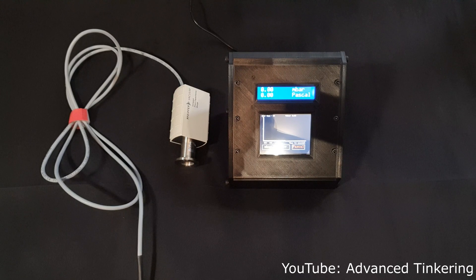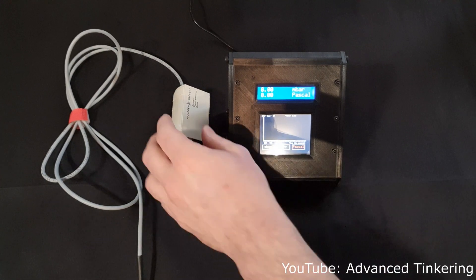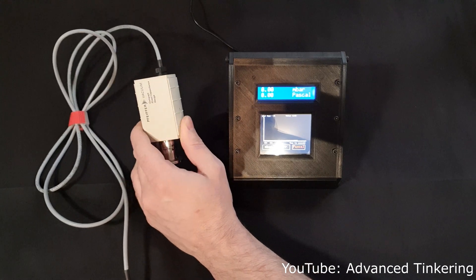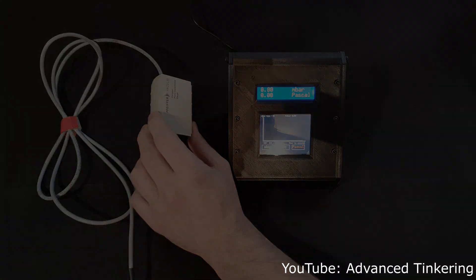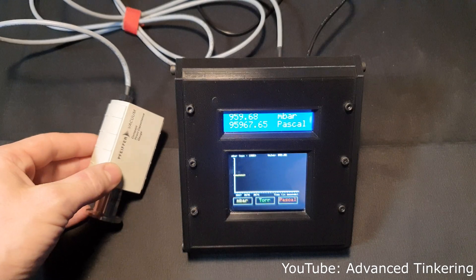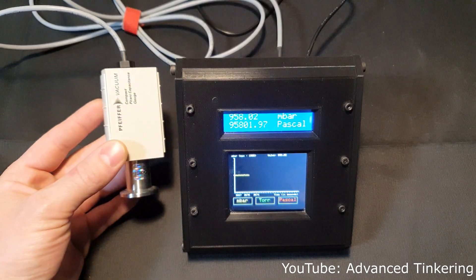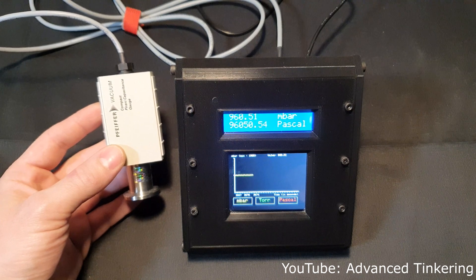But what you can get pretty cheap is the vacuum gauge itself. You will only buy the vacuum gauge—the cable was cut off in my case—and you will get nothing else, so you have to solder your own cable to it and also use your own connector. This video will mainly be about the vacuum controller you can see on the right hand side and how I built it.